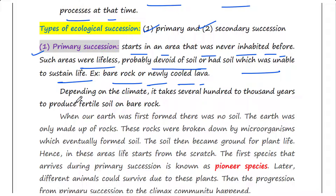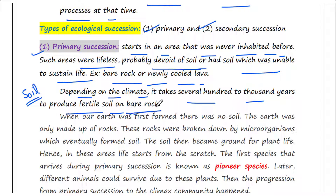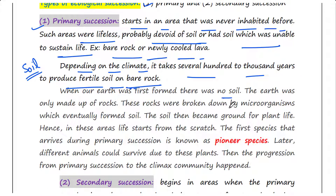Before a biotic community of diverse organisms can be established, there must be soil. Depending on the climate, it takes several hundred to thousands of years to produce fertile soil on bare rock. When our Earth was first formed, there was no soil — the Earth was only made up of rocks. These rocks were broken down by microorganisms, which eventually formed soil. The soil then became the ground for plant life.